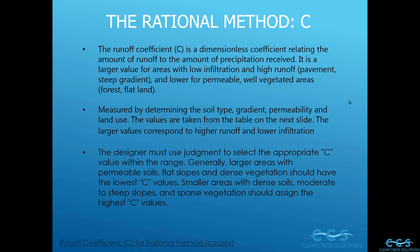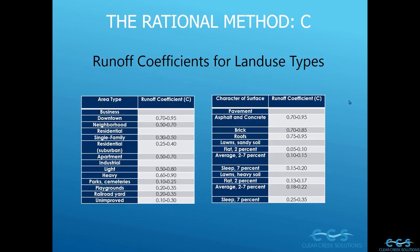If you have an impervious area such as pavement, you're going to get more runoff and therefore greater peak flow. C is measured by determining the soil type, gradient, permeability, and land use. The values are taken from a table — I'll show you what the different C values are. Larger values correspond to higher runoff and lower infiltration. The designer must use judgment to select the appropriate C value within the range. Generally, larger areas with permeable soil, flat slopes, and dense vegetation should have the lowest C values.